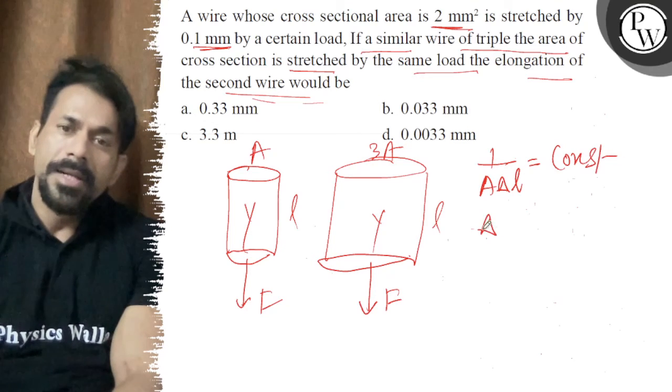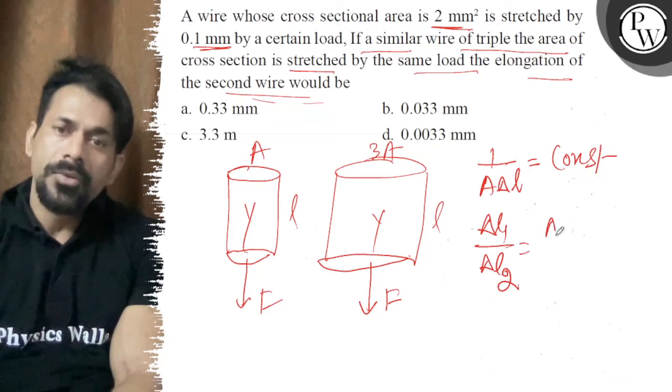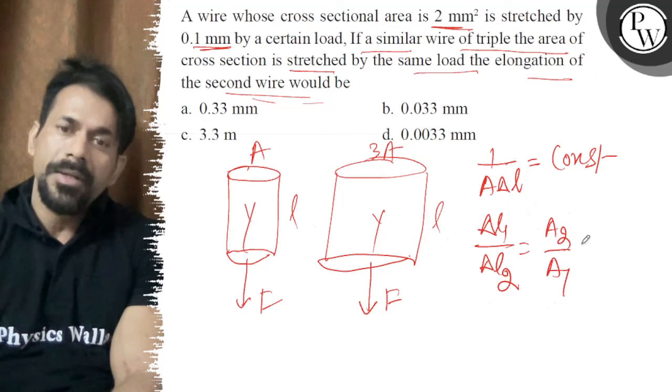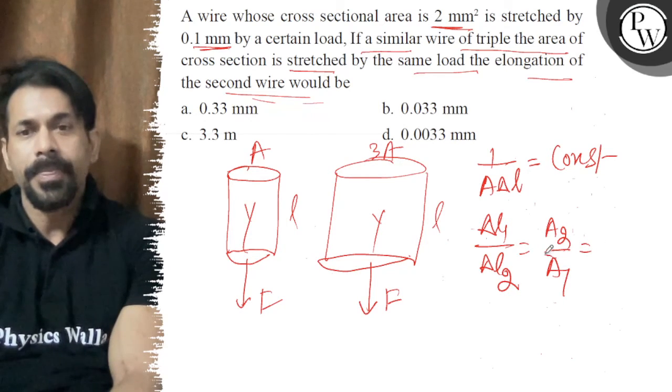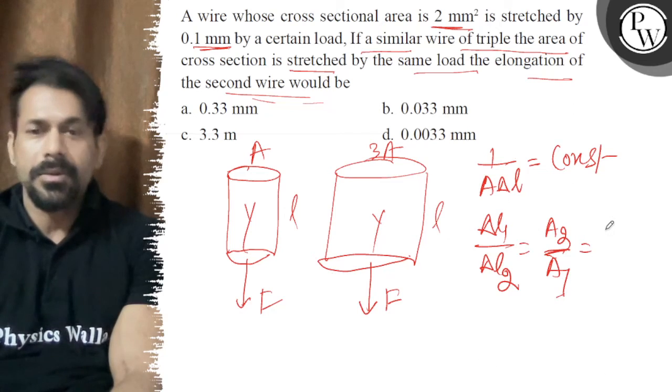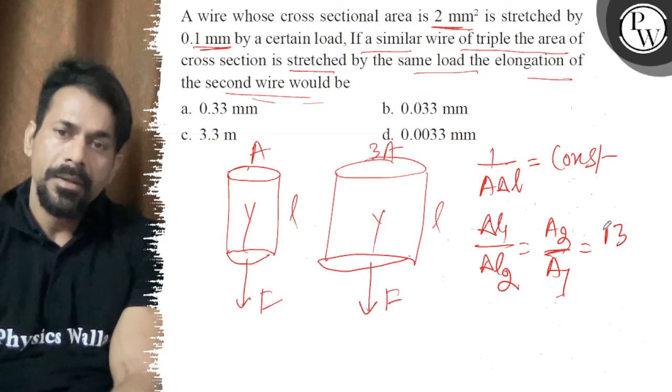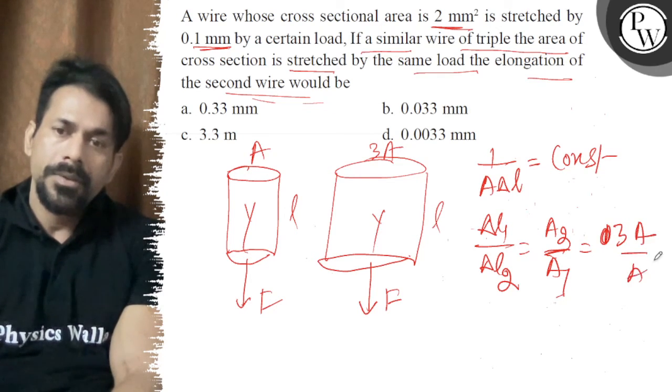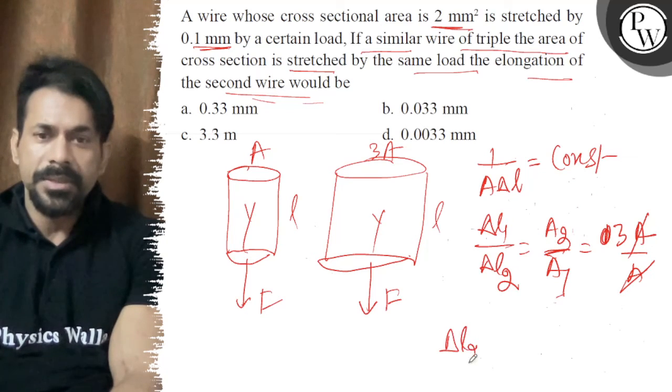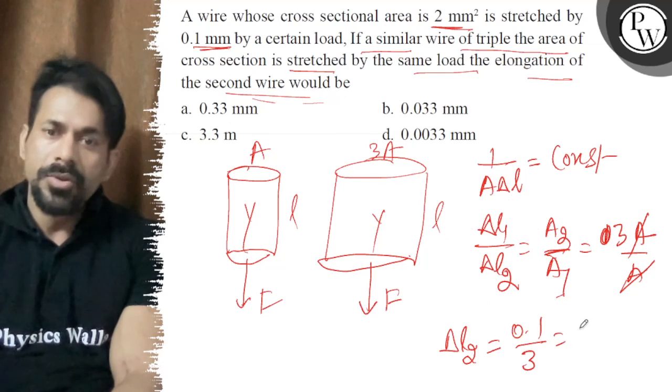ΔL₁ upon ΔL₂ is equal to A₂ by A₁. Area 2 is 3 and area 1 is 1. So ΔL₂ is nothing but ΔL₁ by 3, which is 0.1 by 3, so 0.0333 mm.